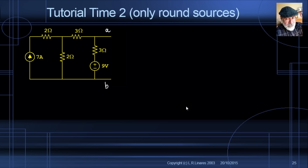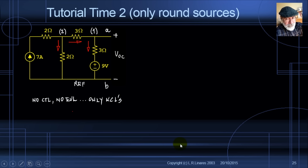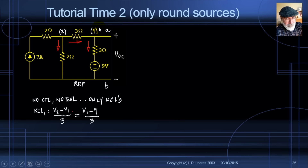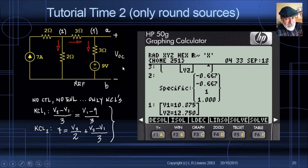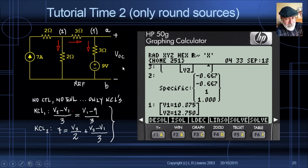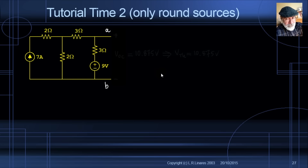Tutorial 2 — same case but a more interesting circuit, again with only independent sources. Find VOC using MNA: choose a reference, node 1, node 2, write branch currents and KCL equations. KCL for node 1: (V2−V1)/3 = (V1−9)/3. KCL for node 2: 7 amps in, V2/2 and (V2−V1)/3 going out. Solving gives V1 = VOC = 10.875 volts, which is also V_TH.